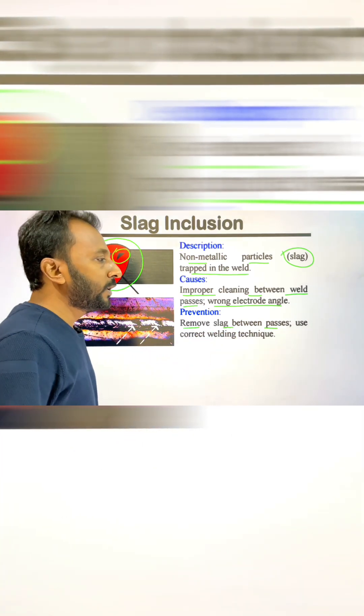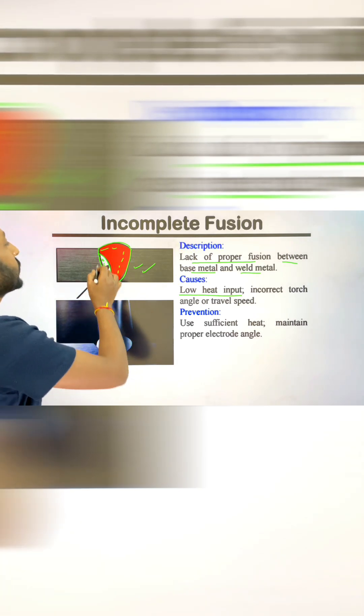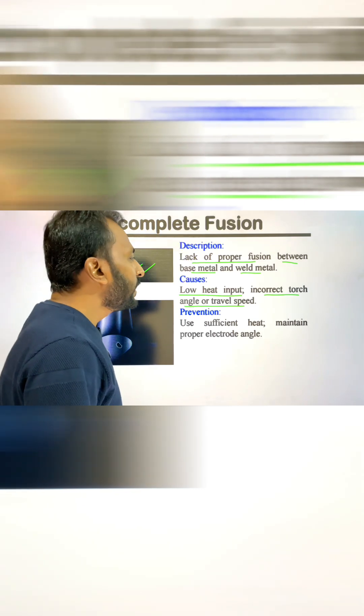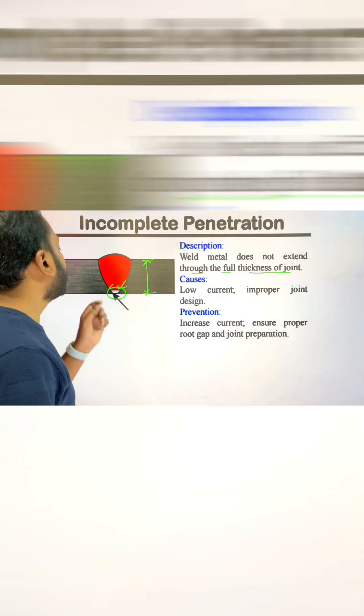Slag inclusion is a non-metallic particle or slag trapped in the weld. We have to remove the slag between passes when welding, otherwise low fusion occurs. It also happens if we use incorrect torch angle or incorrect travel speed. If the travel speed is faster than designed or the current is too low, it can occur.